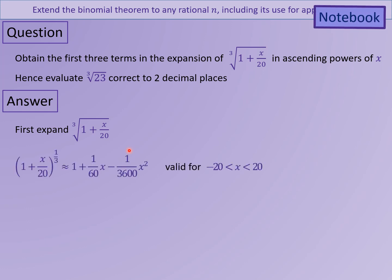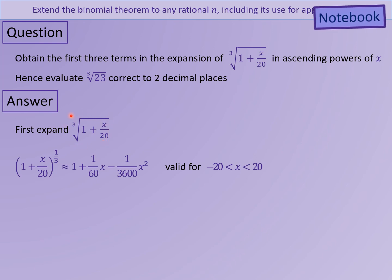The first thing is to expand this part. You know the cube root of 1 plus x over 20 is the same as 1 plus x over 20 to the power third. Using the skills you just practised, well done if you managed to get 1 plus 1 over 60 x minus 1 over 3600 x squared, and that's valid between x equals minus 20 and x equals 20. Now we want to evaluate the cube root of 23. We've got a way of expanding the cube root of 1 plus x over 20. You might look at that and think they're similar — they're pretty much the same, except if I write this as 1 plus 22.